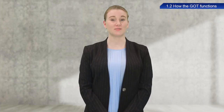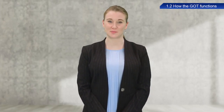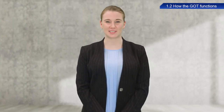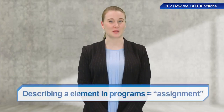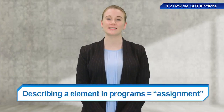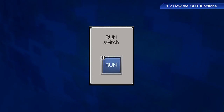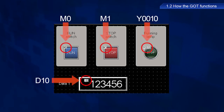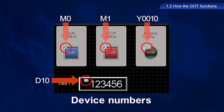Do you now have a better understanding of the relationship between GOTs and PLC programs? GOT switches and lamps must be described in PLC programs to have functionality. Describing these elements in programs is referred to as assignment. The text string M0 has been assigned to the GOT run switch. These assigned text strings, such as M0 and D10, are referred to as device numbers. Device numbers are assigned to other switches and lamps in the same way. Please remember these terms as they will continue to be used throughout this training.